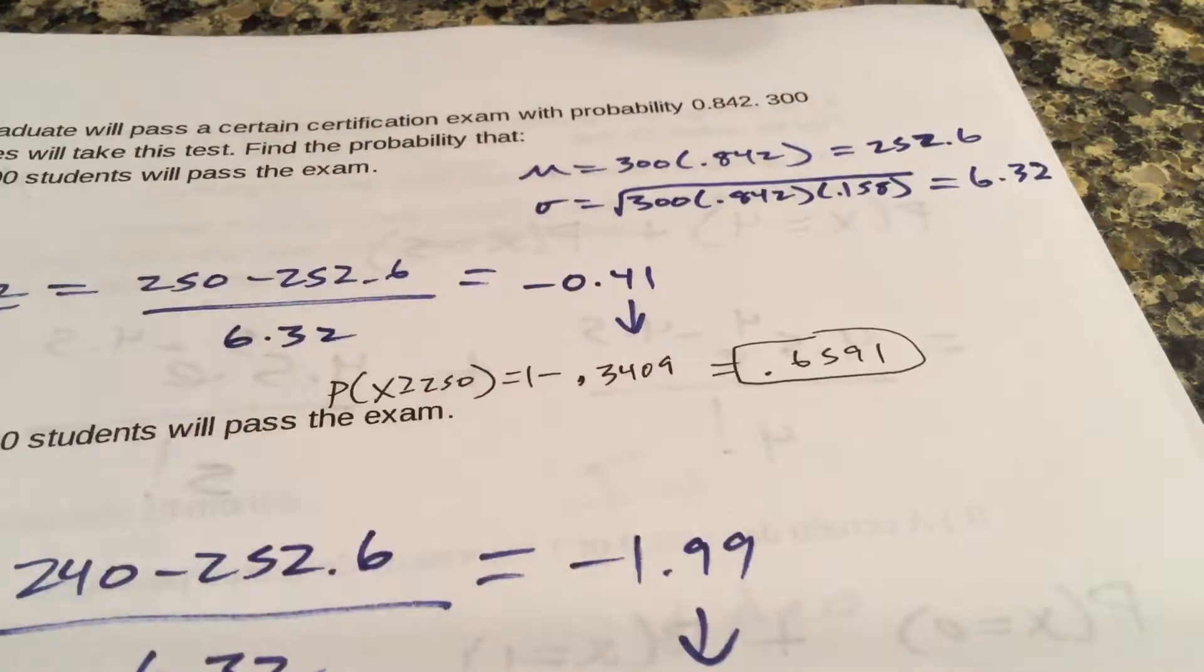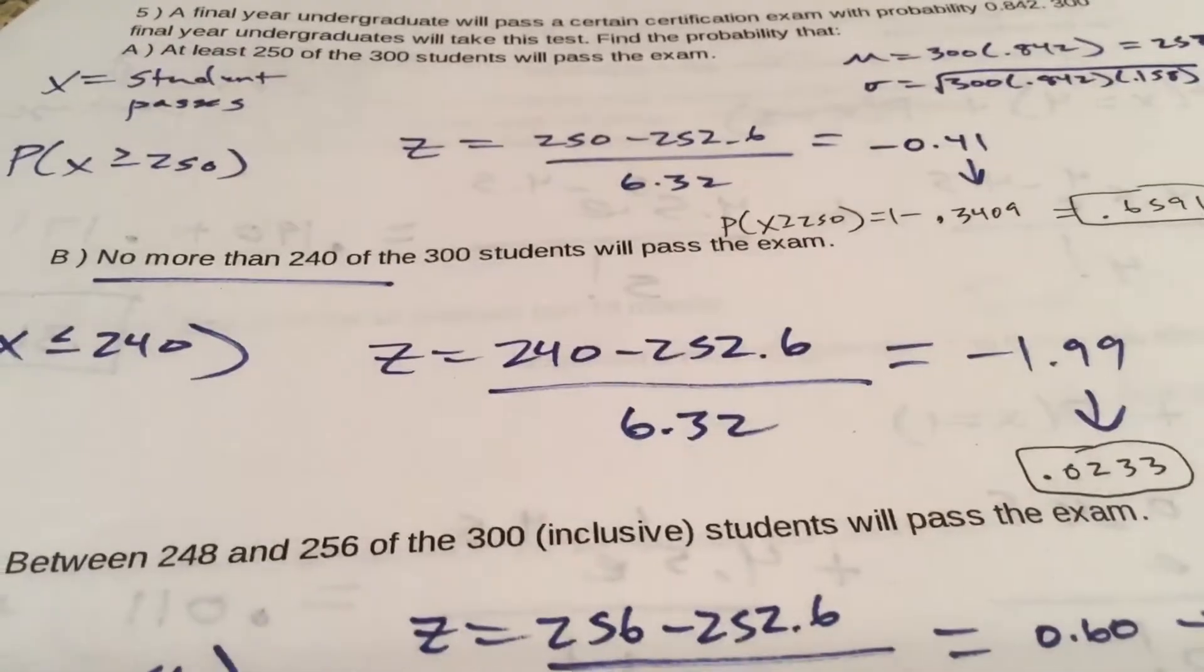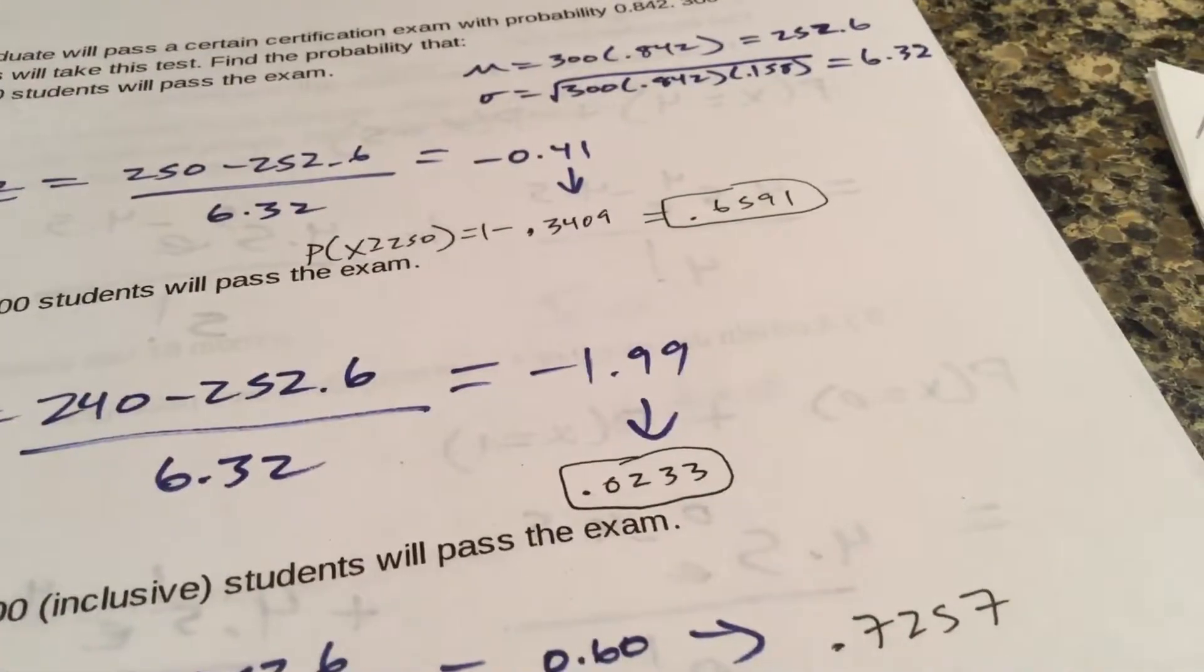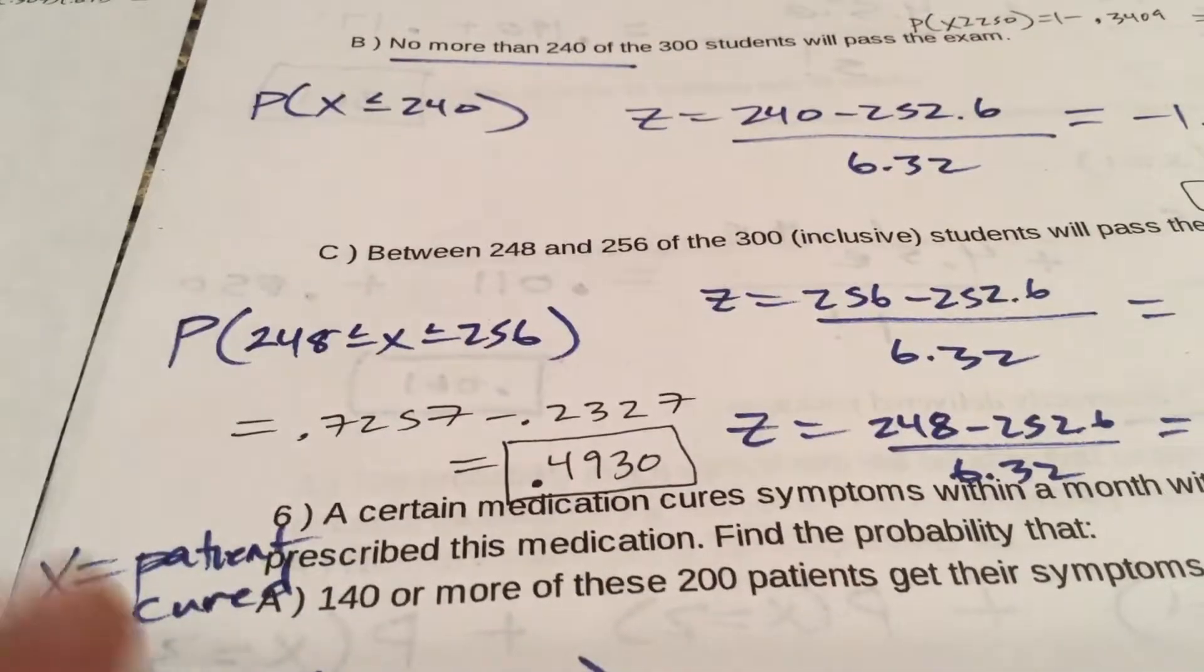No more than 240, that means less than or equal to 240. So there it is, pause this, we should talk about in class. But here's the answer: between 248 and 256 inclusive, including both. Put 256 in for x, 248 in for x, get your two z-scores, those are the areas that are associated with it, so subtract them.